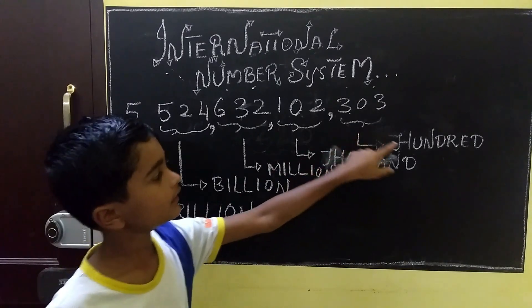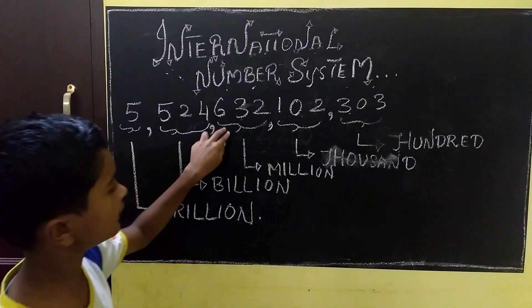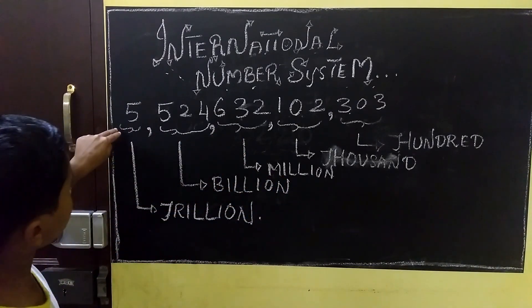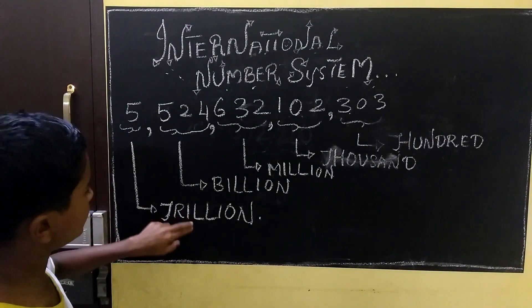The first head is hundreds, the second head is thousands, the third head is millions, the fourth head is billions. The last head is trillions.